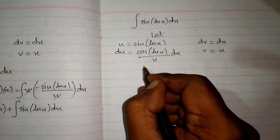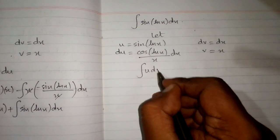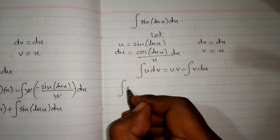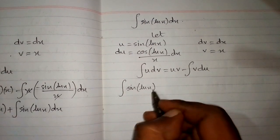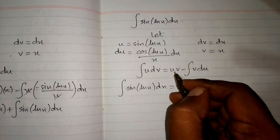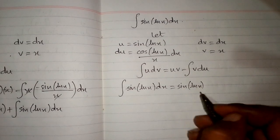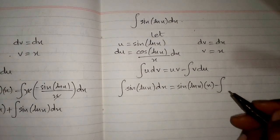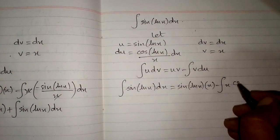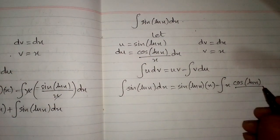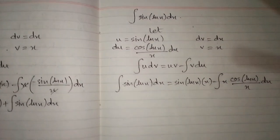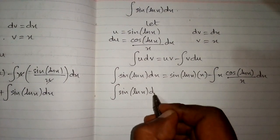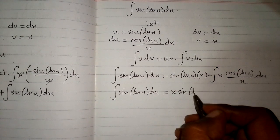Integrating both sides, v equals x. The integration by parts formula gives: integral of u dv equals uv minus integral of v du. Substituting, u is sine of ln of x, v is x, so we get x times sine of ln of x minus integral of x times cosine of ln of x upon x dx.